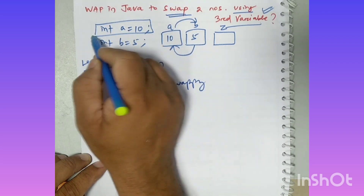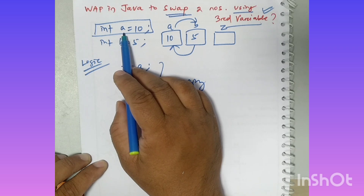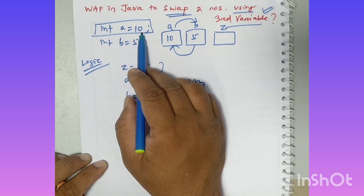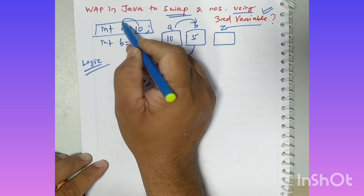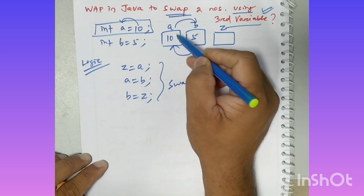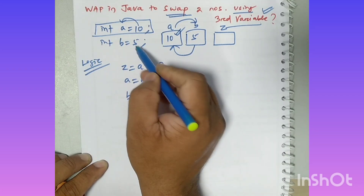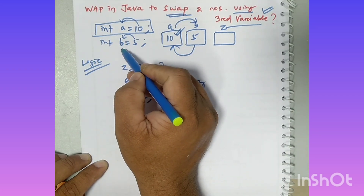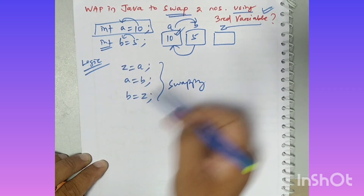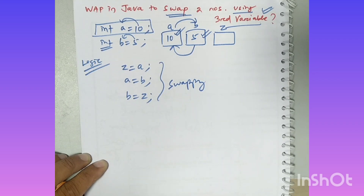I think you know it better — int is the data type, A is the variable name, equals is the assignment operator, and 10 is the value. So the 10 value is being assigned to variable A. Similarly, int B equal to 5 means 5 is the value assigned to variable B, and the data type is int.